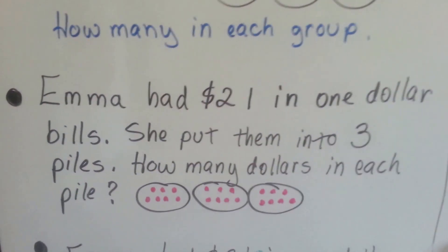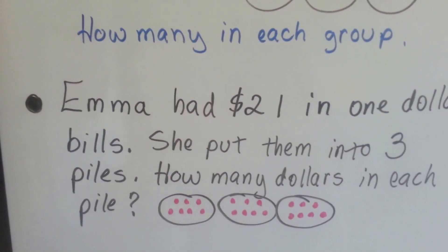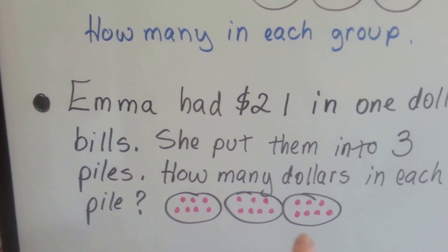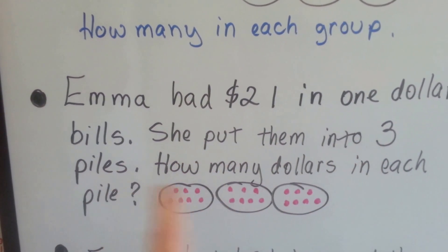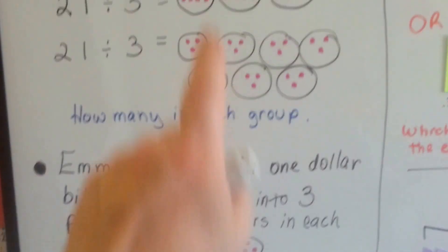Well, for this one it tells us that there are three piles. See that? And that there are seven that are going to end up being in each pile, because we have three piles. So that would be this one up here.